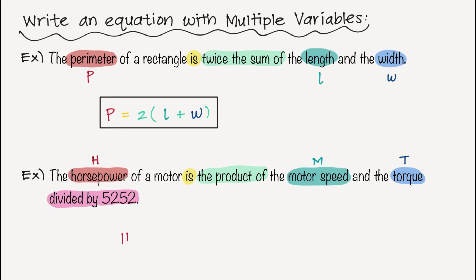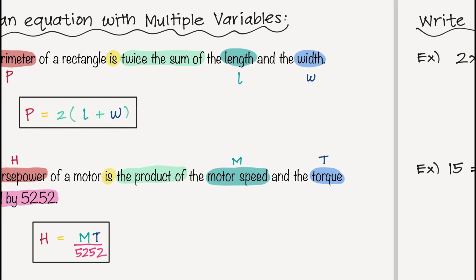So let's write it out. H equals the product of. So what two things am I multiplying? The M and the T. So I'm just going to write them as M and a T next to each other. And I already know that that means that they're being multiplied. And then that product is going to be divided by 5,252. And that's it. So again, I was able to write another equation that had three different variables again. Let's move on.